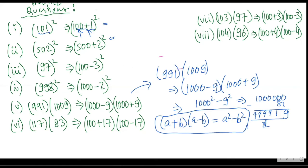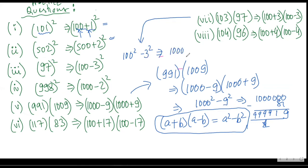So this is how these questions are done. Let us do question 7. This can be written as 100² minus 9, because 9 is 3². So this would be 10000 minus 9. So this would be 9991.